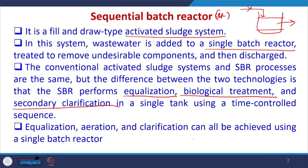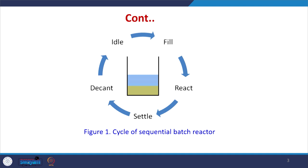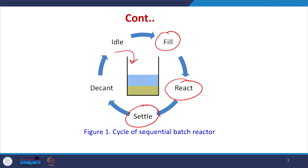Equalization, aeration, and clarification can all be achieved using a single batch reactor. The typical SBR cycle is: fill phase, then reaction time for treatment, then settling phase once desired efficiency is achieved, then decantation to remove clear water, and optionally an idle phase. The cycle is: Tc = Tf + Tr + Ts + Td + Ti, where each letter stands for fill, react, settle, decant, and idle phase.